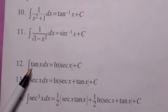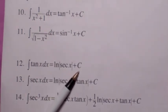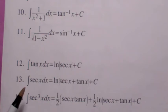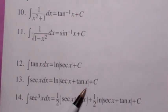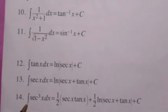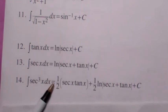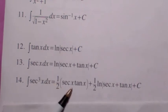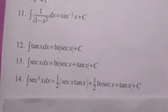Numbers 12 through 14: the integral of tangent is the natural log of the absolute value of secant, plus C. The integral of secant is the natural log of the absolute value of secant plus tangent. And this one is kind of messy but comes up unfortunately way too much: the integral of secant cubed is one-half secant tangent plus one-half the natural log of the absolute value of secant plus tangent. Know those.